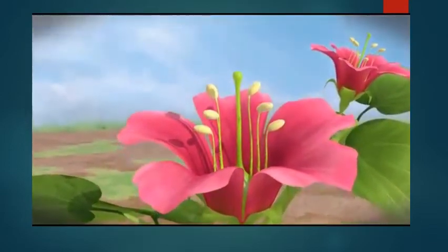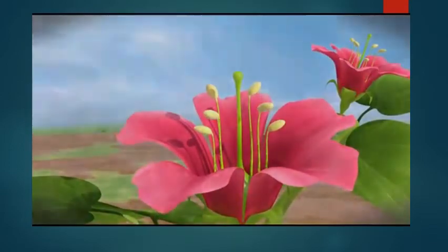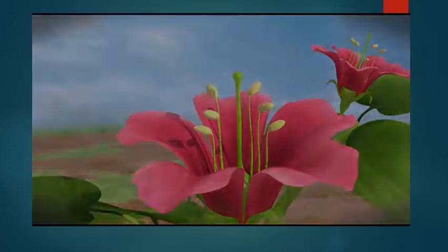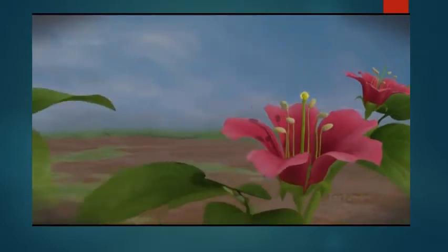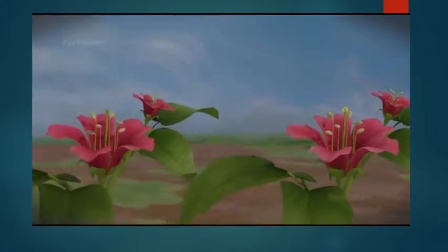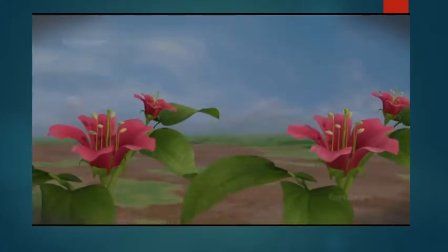The transfer of pollen grains from the stamen to the stigma of the same flower is known as self-pollination. The transfer of pollen from the stamen of one flower to the stigma of another plant within the same species is known as cross-pollination.